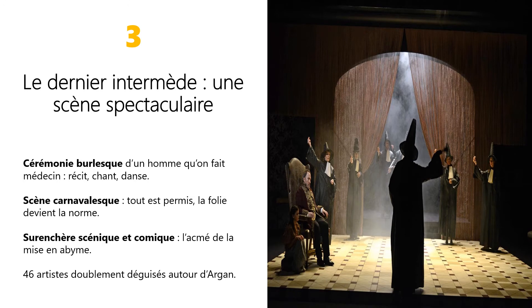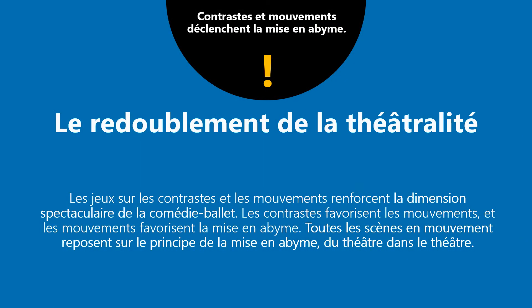Le dernier intermède est l'acmé de la comédie. Bérald, porte-parole de Molière dans la pièce, met en scène une cérémonie burlesque pour faire croire à Argan qu'il va devenir médecin. Il s'agit d'une scène carnavalesque où tout est permis et où la folie devient la norme. 46 artistes sont doublement déguisés autour d'Argan, l'illusion théâtrale est redoublée. On voit donc que le jeu sur les contrastes et la multiplication des scènes en mouvement sont les éléments déclencheurs de la mise en abîme. Les contrastes jouent sur les mouvements et les mouvements favorisent la mise en abîme.